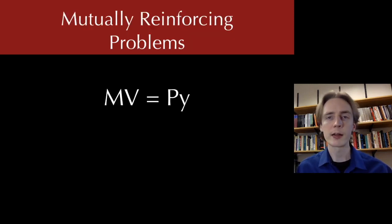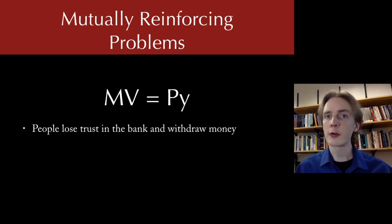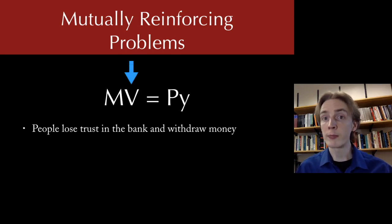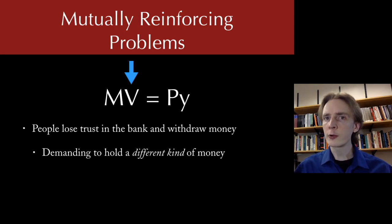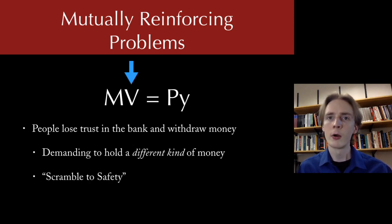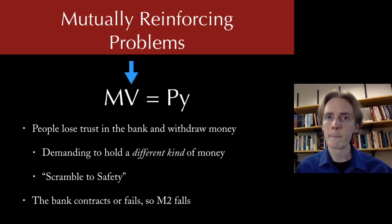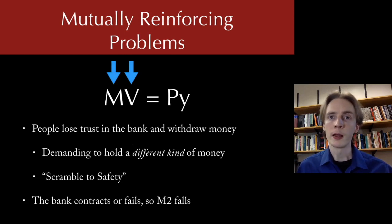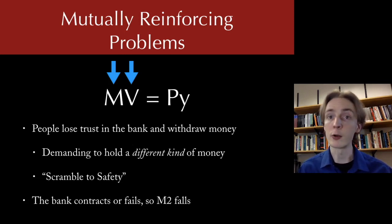Let's look at this in terms of the equation of exchange. Suppose people lose trust in the bank and withdraw their money — they're trying to increase their money holdings, so velocity is going to fall. People want to hold money rather than spend it, so the flow of money through the economy slows down. Not only are they increasing their demand for money in general, but they're also increasing their demand for a particular type of money — call this a scramble to safety. They want something that's not a promise. When they do this, that forces commercial banks to contract their issues. The money supply falls too — either banks contract lending or they fail entirely, and money that was money is no longer money. You get this double hit, and these problems exacerbate each other.